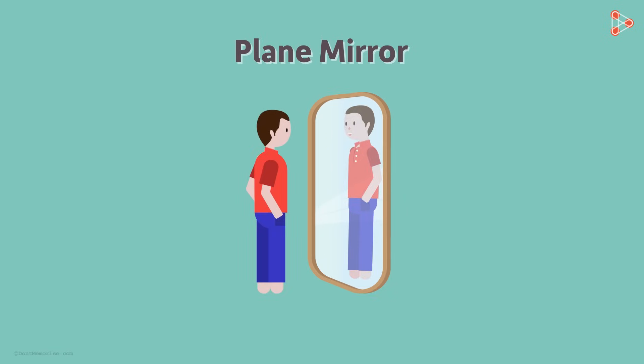When we stand in front of a mirror, we see an image of ourselves in the mirror. Nothing surprising there. Why are we able to see our image? Yes, it's due to the reflection of light.